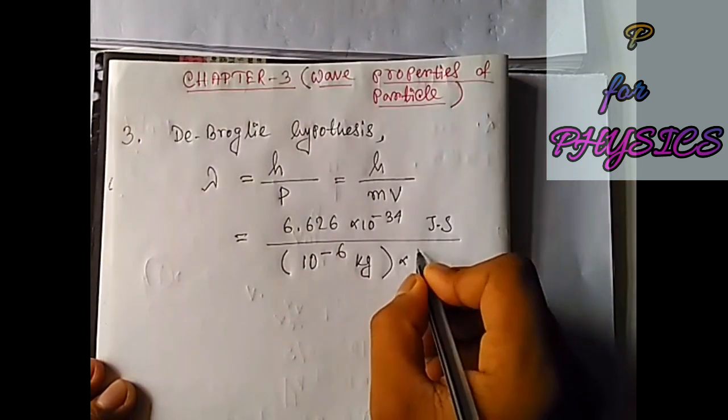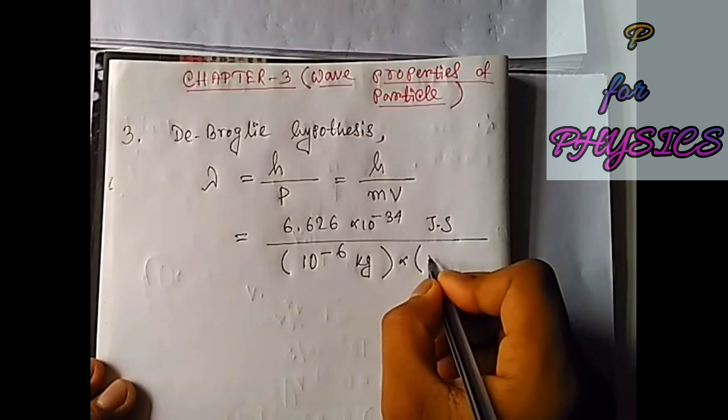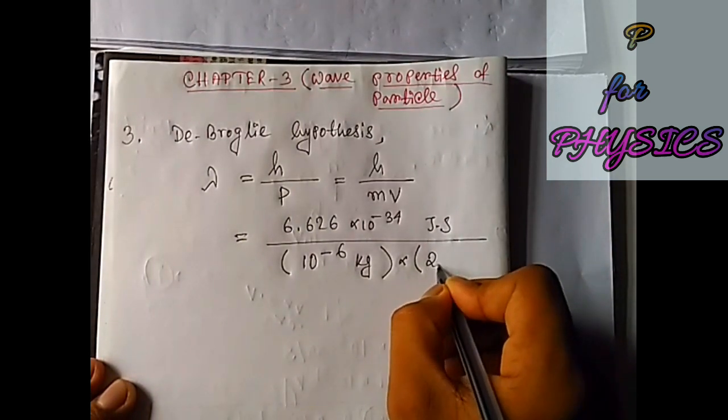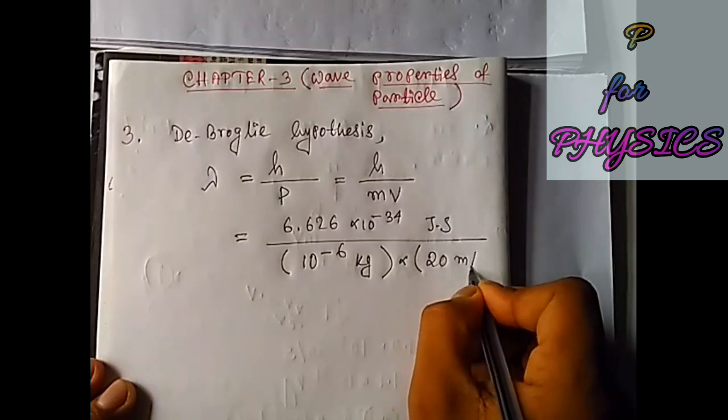The velocity is given in SI, so just put the value of the velocity, which is 20 meters per second.